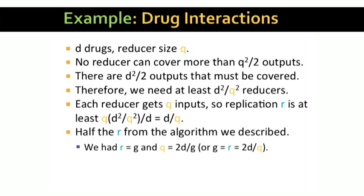Notice that the lower bound, R greater than or equal to D over Q, is half the replication rate that the algorithm we described using g groups uses. If you check back to that discussion, you'll find that we had R equals g, the number of groups. And also, Q was 2d over g. If you turn this equation around, you get g equals 2d over Q. Or R equals 2d over Q, since R and g are the same.